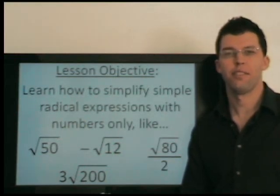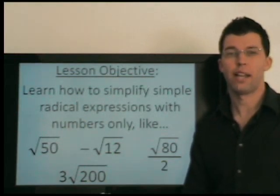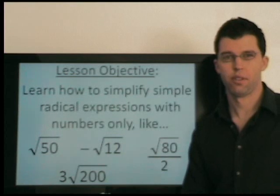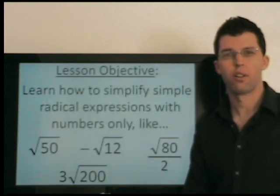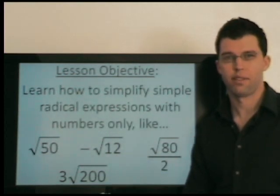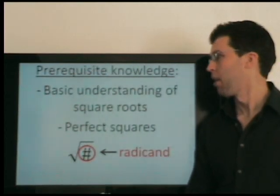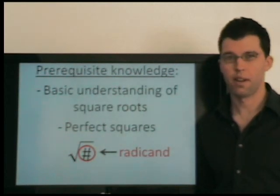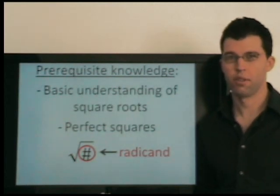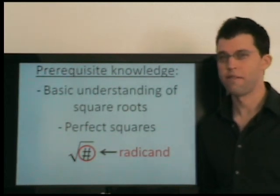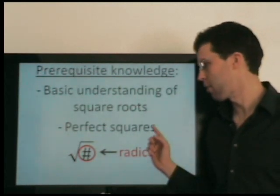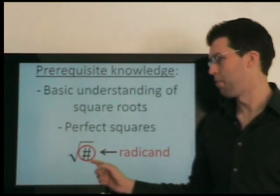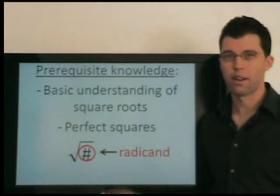Hi. The goal of this lesson is to teach you how to simplify radicals with numbers. Radicals with variables aren't addressed in this lesson. To do this, you must already understand the basics of square roots, you must be familiar with the perfect squares, and you must know this term — radicand — the number under the radical.